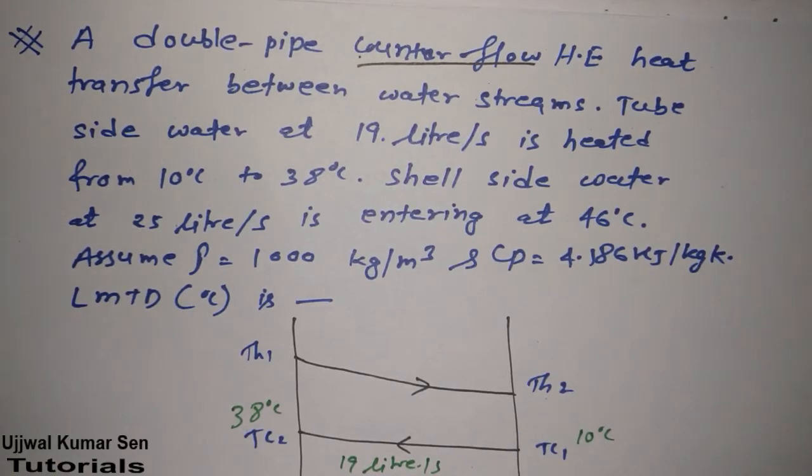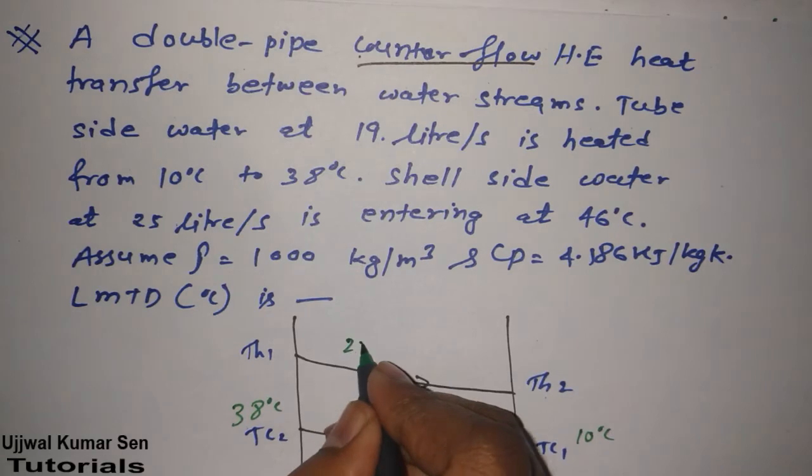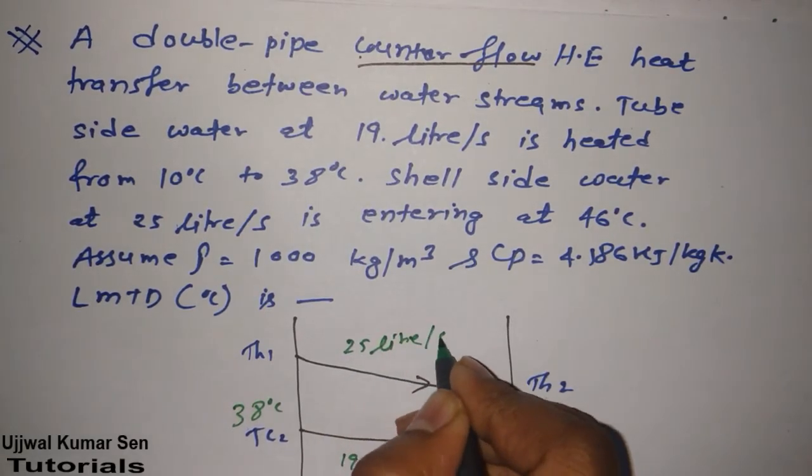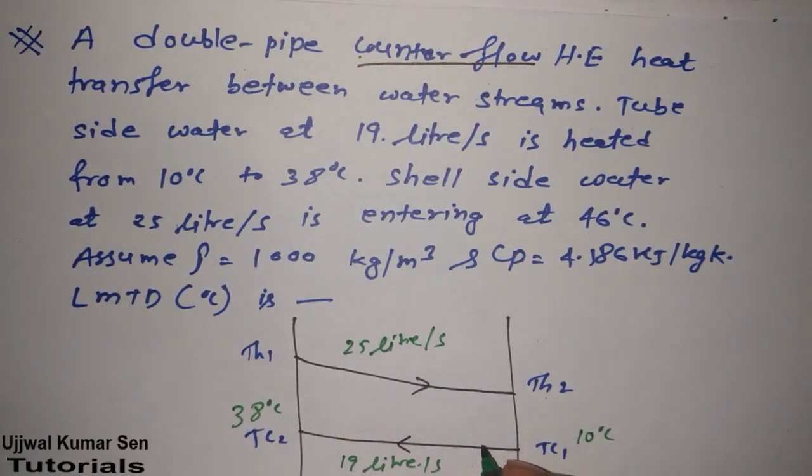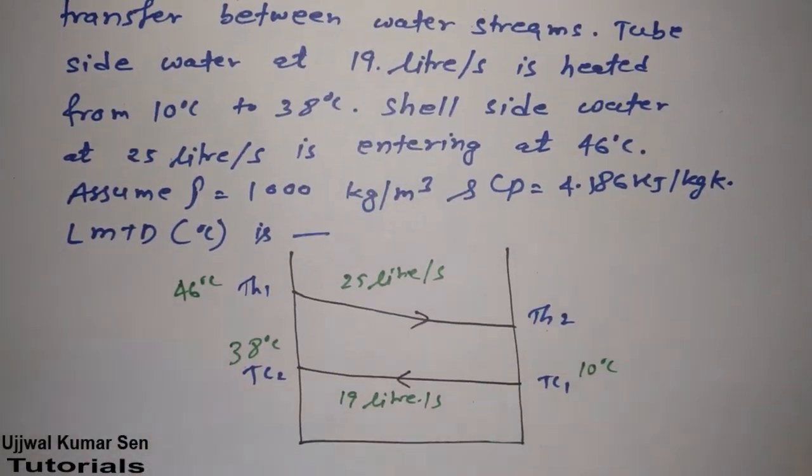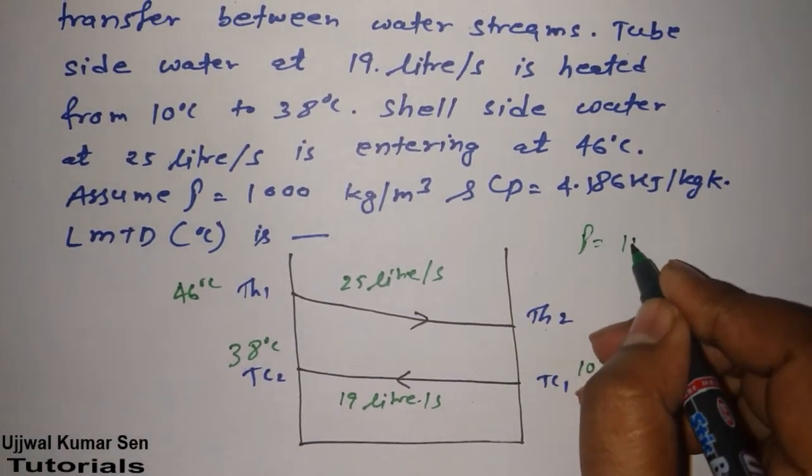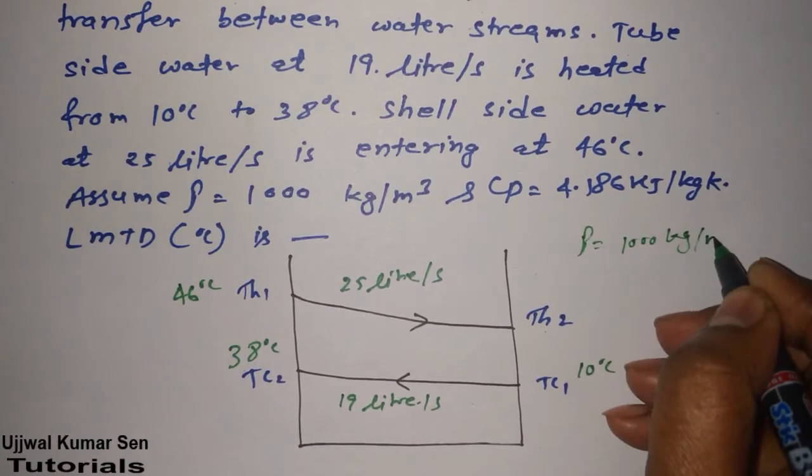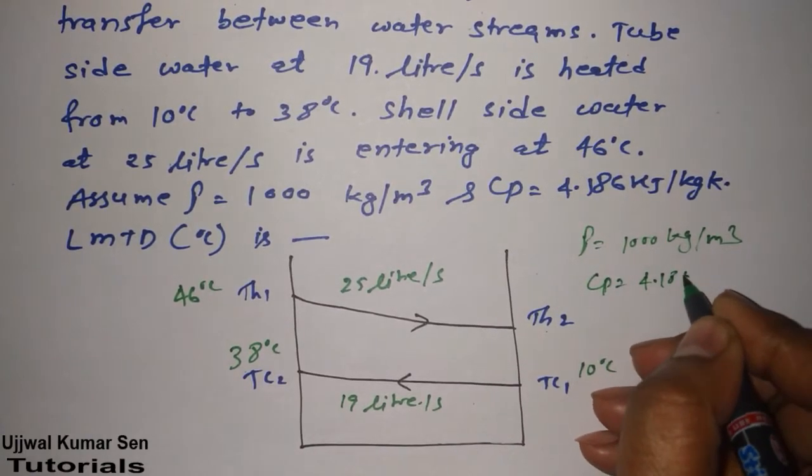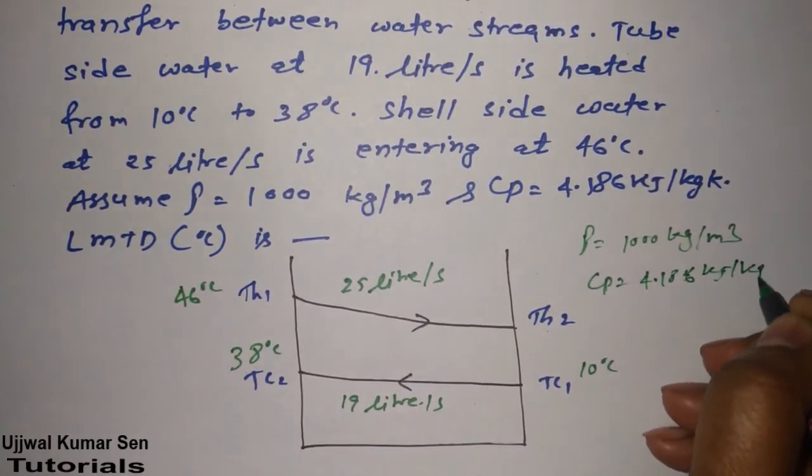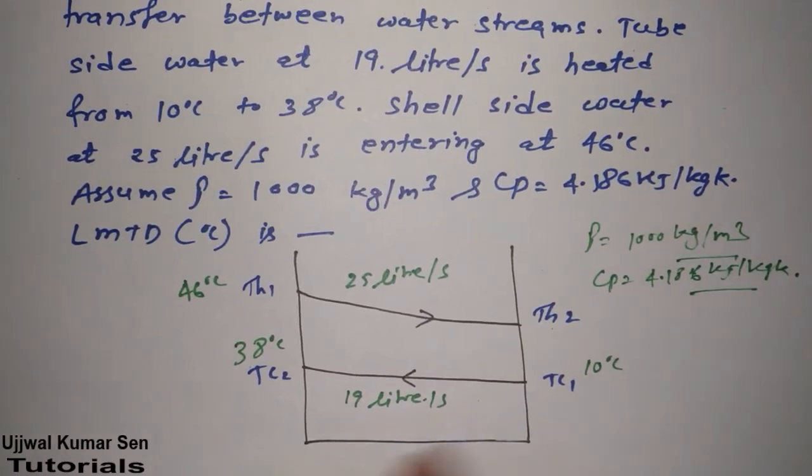Now shell side water, its flow rate is 25 liter per second and its entering temperature is 46 degree Celsius. So they said to us that density is 1000 kg per meter cube and Cp is 4.186 kilojoule per kg Kelvin.